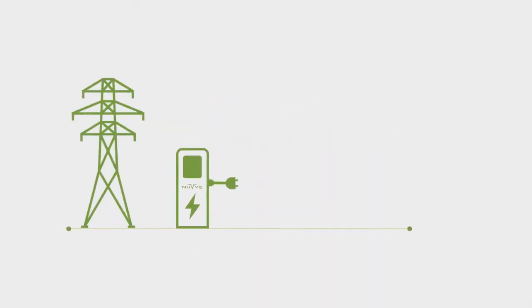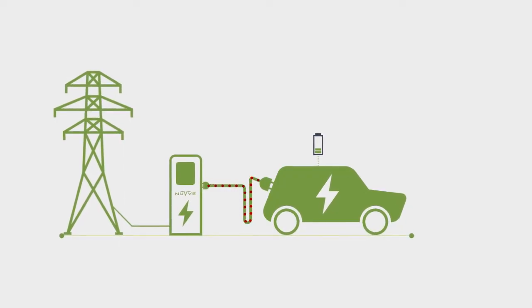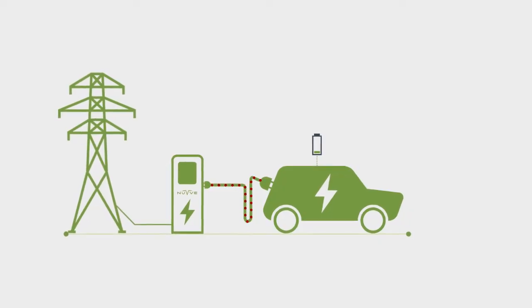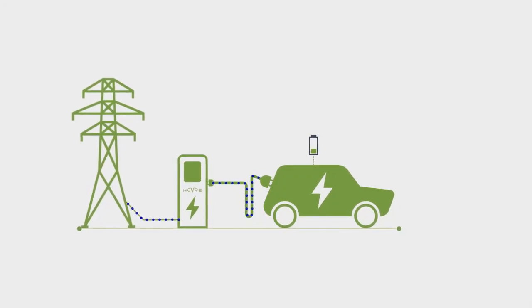Instead of just pulling power from the grid, V2G allows a vehicle's battery to store energy, including renewables, and then safely discharge part of that energy back to the grid when it's needed most.